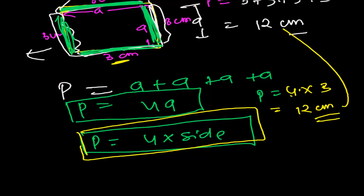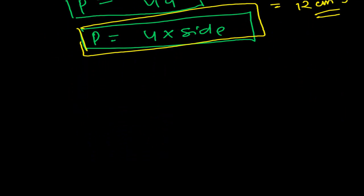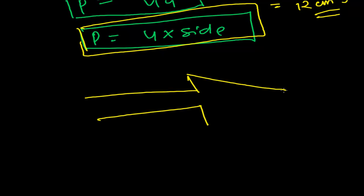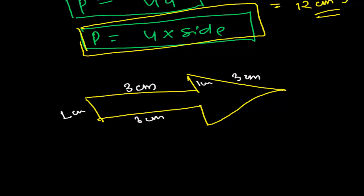Whether it's a regular figure or irregular figure, any kind of figure — suppose I am making something like an arrow shape. I want to find the perimeter of this arrow. This side is 3 cm, this is also 3 cm, this is 1 cm, this is 1 cm, this is 3 cm, this is 3 cm, and this is 1 cm. What is the perimeter of this closed figure? The figure must be closed to find the perimeter.